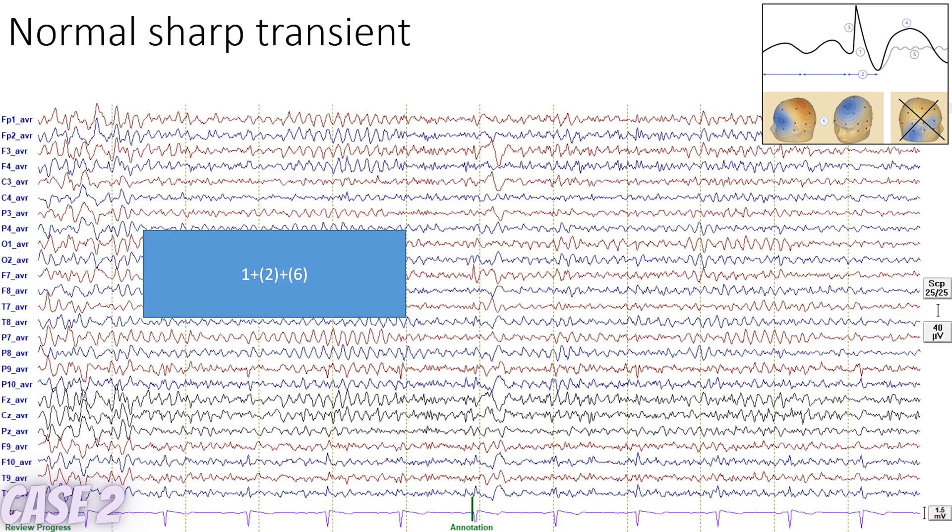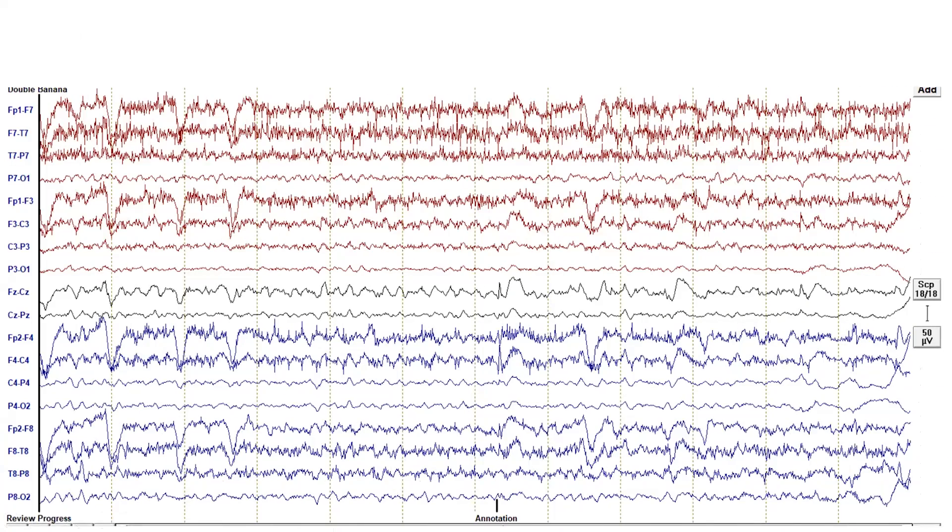Unless you see a lot of them on the recording, right? Exactly. So at least five times. But again, most of the raters only agreed on number one. So raters did not reach a majority neither on two or on six. This is a normal sharp transient, but this time it's a pop-up not in the theta or the alpha frequency domain, but it's in the beta.